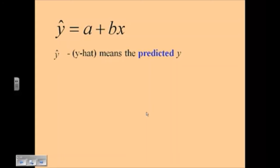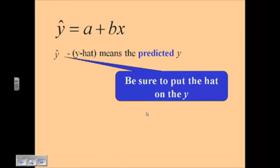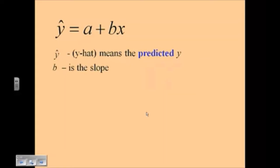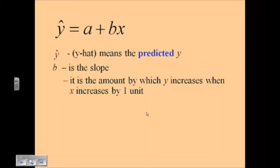The y hat means the predicted value of y. When you're writing this in context, you always want to make sure you include that this is a predicted value, and you always want to be sure that you put the hat on the y. B is the slope, it's the amount by which y increases when x increases by one unit. And that's an important phrase because you do have to write these things in context.